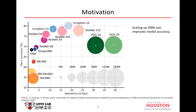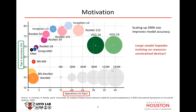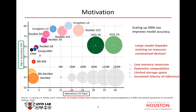Looking at how deep neural network sizes have grown through the years, the diameters of circles in this figure indicate approximately the model sizes. Bigger networks like Inception or VGG have higher accuracy compared to smaller networks, but the number of operations and model size also increase dramatically — VGG-19 has about 155 million parameters. Scaling up DNN size improves accuracy but causes problems: low memory resources, expensive computation, limited storage, and increased latency at inference, especially on mobile devices.